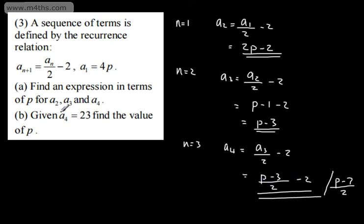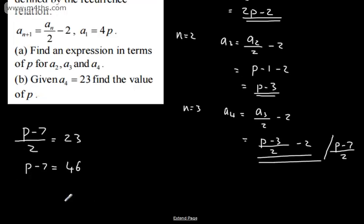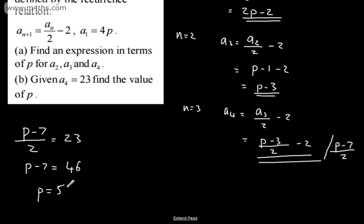In part B it says, given that a4 is equal to 23, find the value of p. So if we consider my expression here for a4 is p minus 7 over 2 or p minus 3 over 2 minus 2. So what we can say then is a4 p minus 7 divided by 2 is going to be equal to 23. So we're simply now saying that a4 is this value right here, and here's my expression for p. Multiplying both sides by the 2, p minus 7 is going to be equal to 46. Adding the 7 to both sides, p is going to be equal to 53.